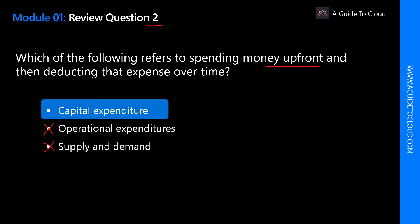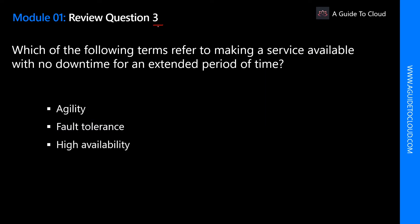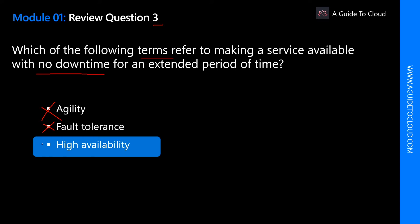Capital expenditure refers to spending money on physical infrastructure upfront and then deducting that expense from your tax bill over time. Question 3: Which of the following terms refers to making a service available with no downtime for an extended period of time? The keyword is 'no downtime.' Agility is not correct — agility refers to provisioning or making a service available as soon as possible. Fault tolerance is also not correct — fault tolerance is a capability built into a service to make it resilient to failure. The right answer is high availability, because high availability keeps services up and running for long periods of time with little downtime.